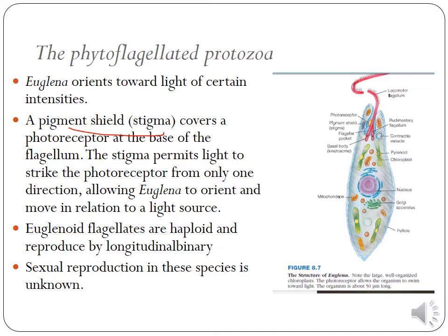Euglena flagellates are haploid and reproduce by longitudinal binary fission. In asexual reproduction, longitudinal binary fission occurs. Sexual reproduction has not been observed in Euglena phytoflagellates.